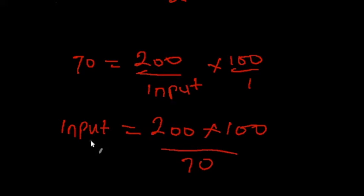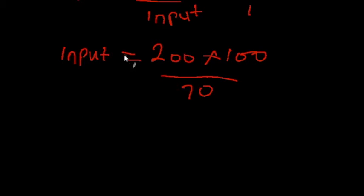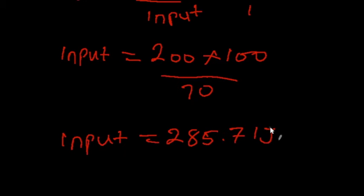So our input work done is equal to 200 multiplied by 100, all over 70. If we sort all of this out using a calculator, you're going to have our input equal to 285.71 joules.